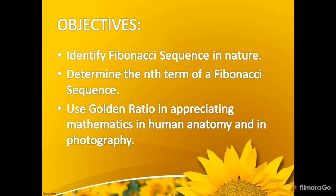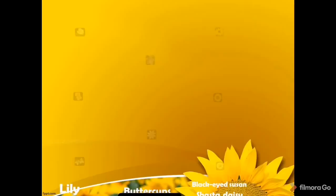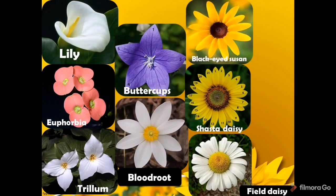Mathematics is all around us. The beauty of flowers, the majesty of a tree, even the rocks upon which we walk can exhibit nature's sense of symmetry. A simple example is the number of petals of flowers: the lily has one petal, euphorbia has two petals, tree lung has three petals, and buttercups have five petals. Black root has eight petals, black-eyed Susan has 13 petals, and daisy has 21 petals.